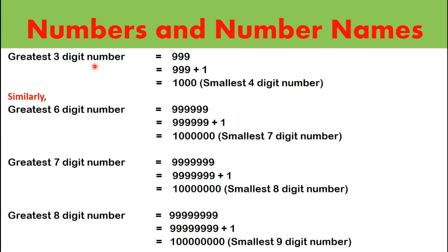We all know that the greatest 3-digit number is 999. If we add 1 to this number we get the smallest 4-digit number, that is 1000. Similarly, the greatest 6-digit number is 9,99,999. When we add 1 to this number we get the smallest 7-digit number, that is 10,00,000. Likewise, 99,99,999 is the greatest 7-digit number, to which if we add 1 we get the smallest 8-digit number.